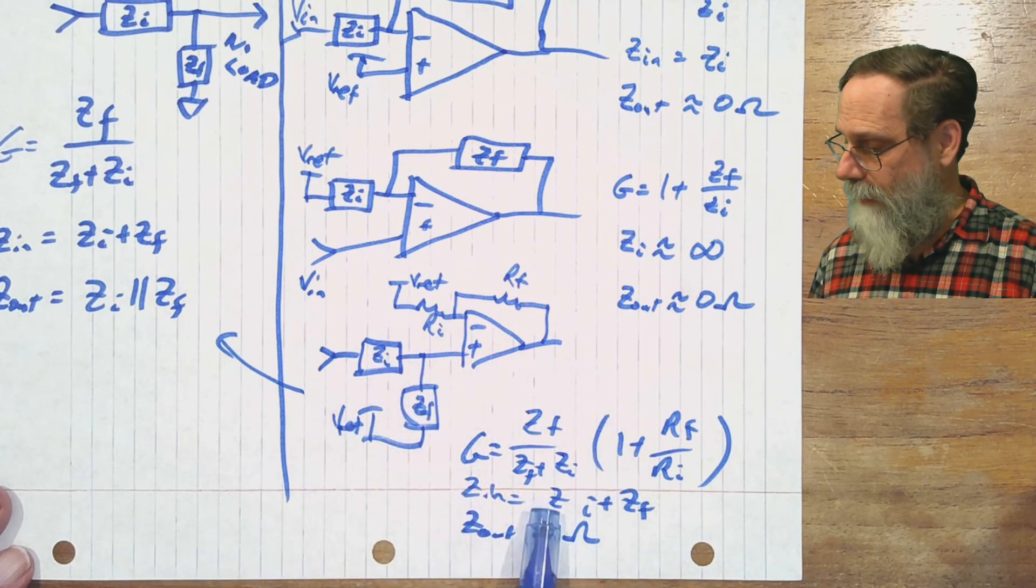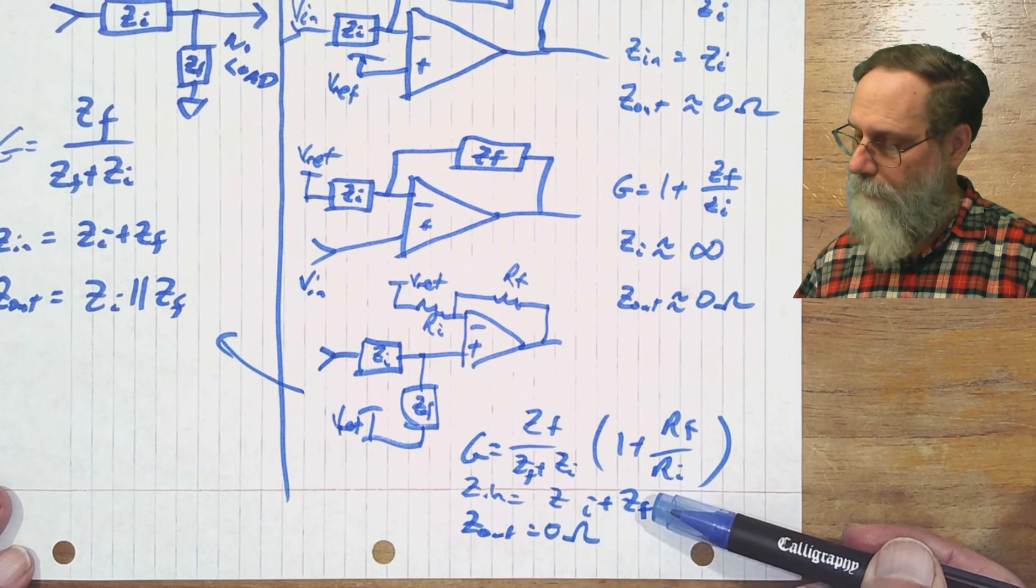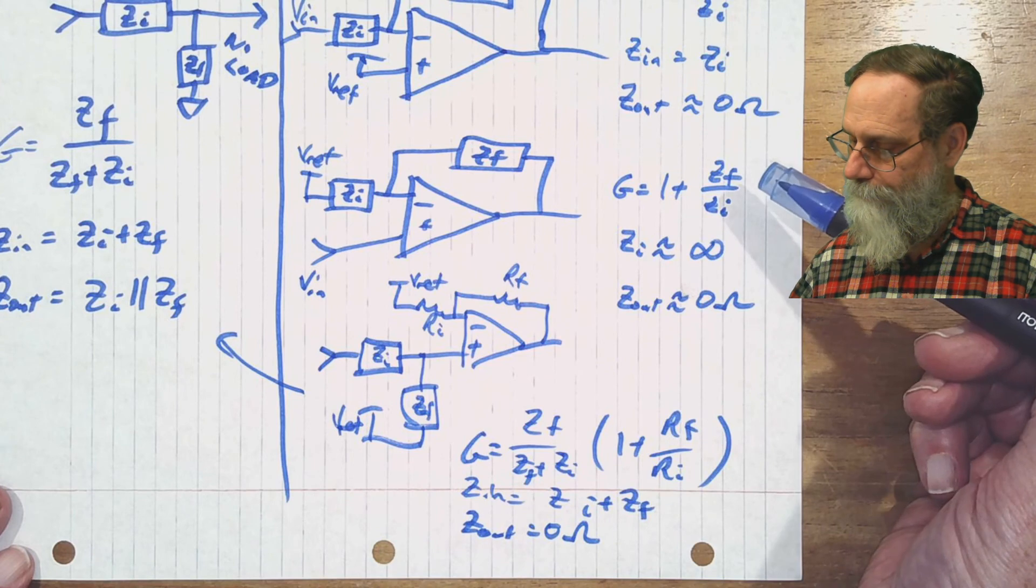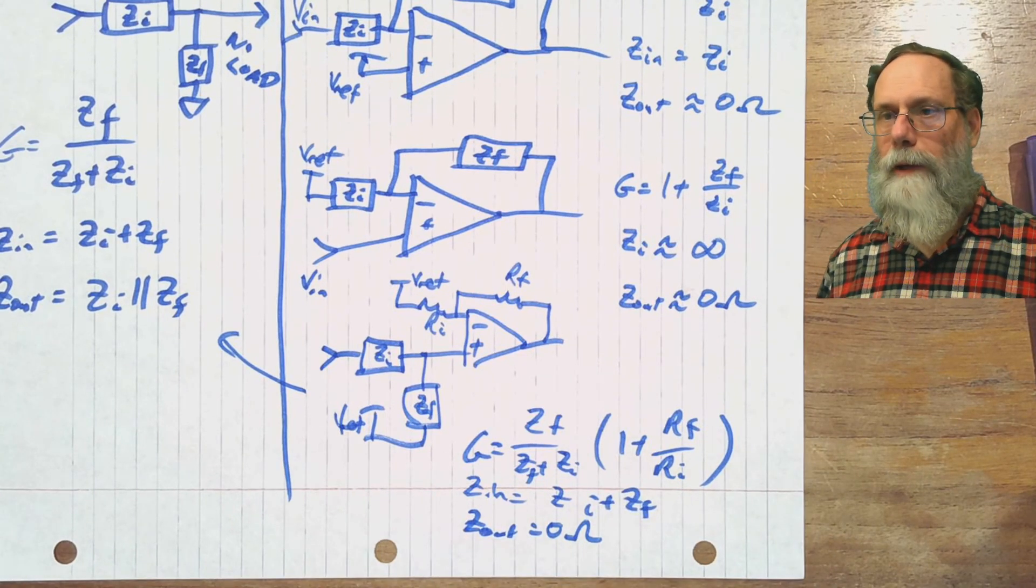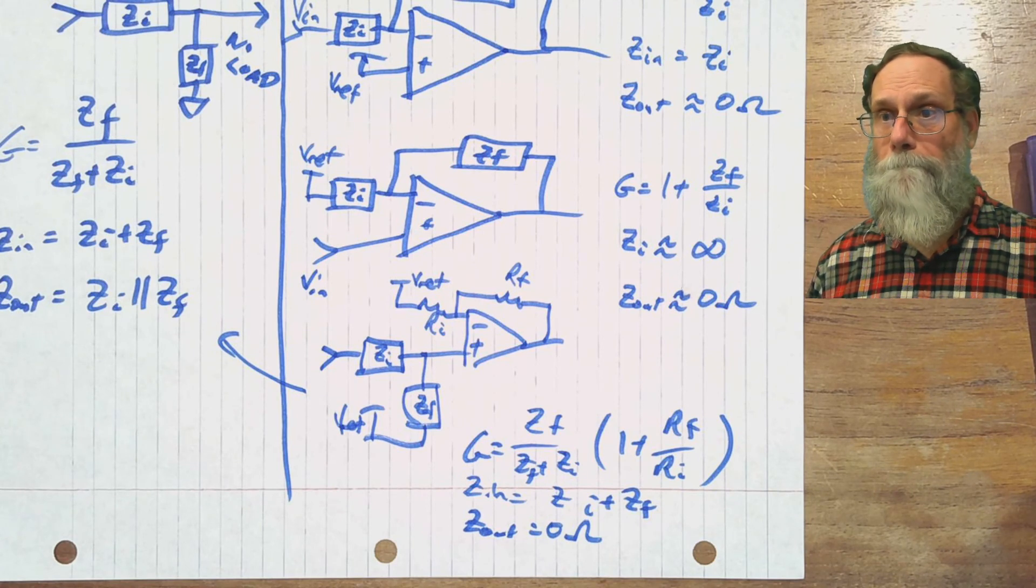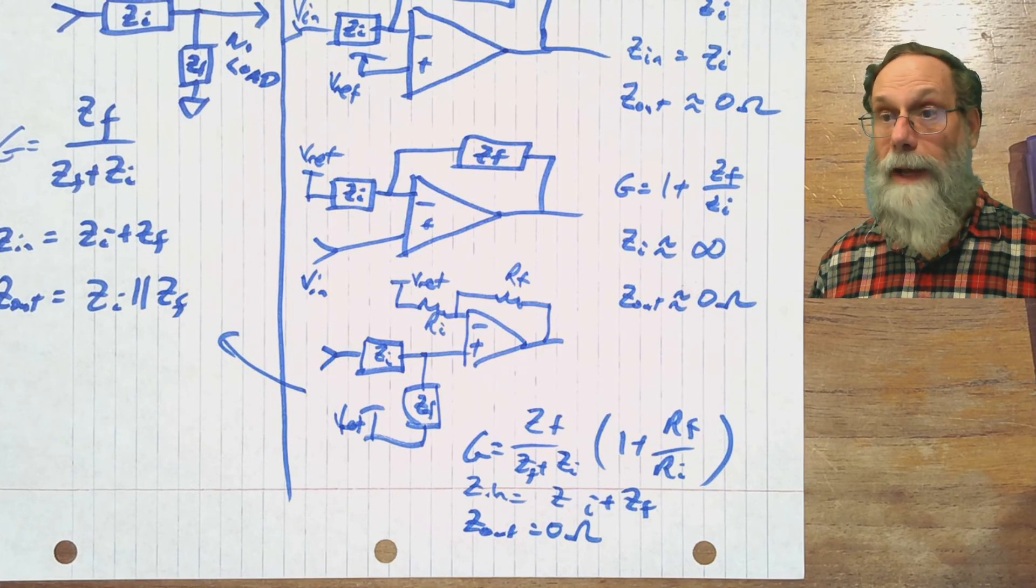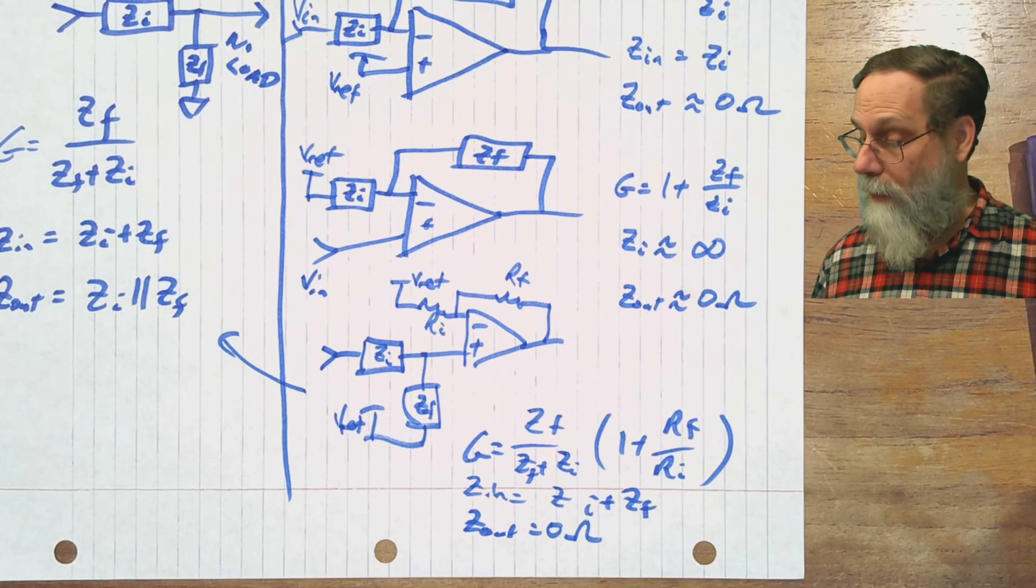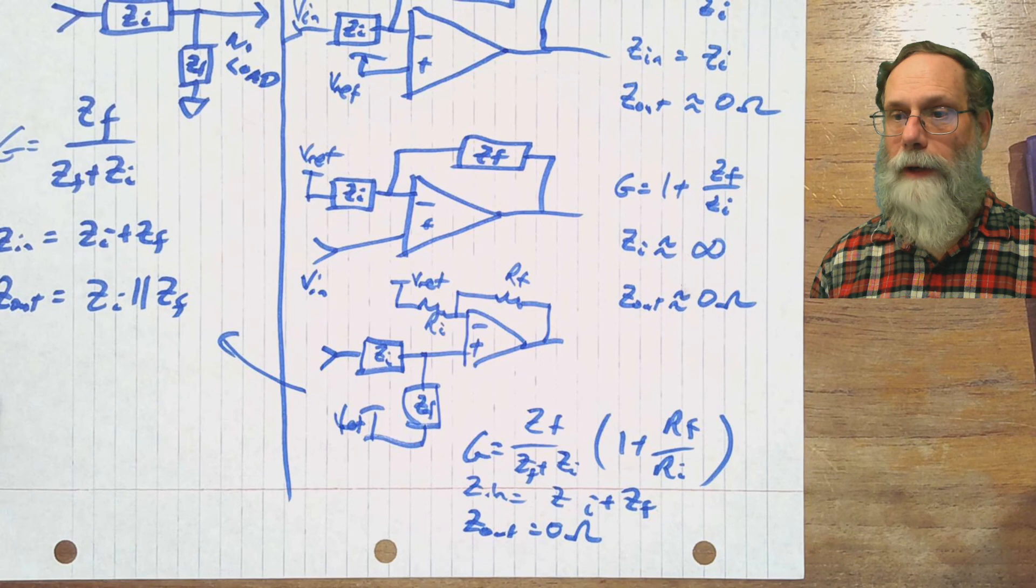And it's got an input impedance of ZI plus ZF, which is a little bit different than the one where we have the non-inverting amplifier by itself. So generally if you need to have something that's easily specified as a passive filter, but you need more gain from it, you can do a passive filter followed by the non-inverting amplifier.